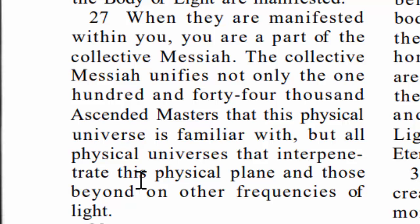Verse 27 goes on to say the collective Messiah unifies not only the 144,000 ascended masters that this physical universe is familiar with, but all physical universes that interpenetrate this physical plane and those beyond all other frequencies of light. These are the entities behind the 144,000 — these Ophanim, these Benay Elohim, these Heos Ha Kodesh.